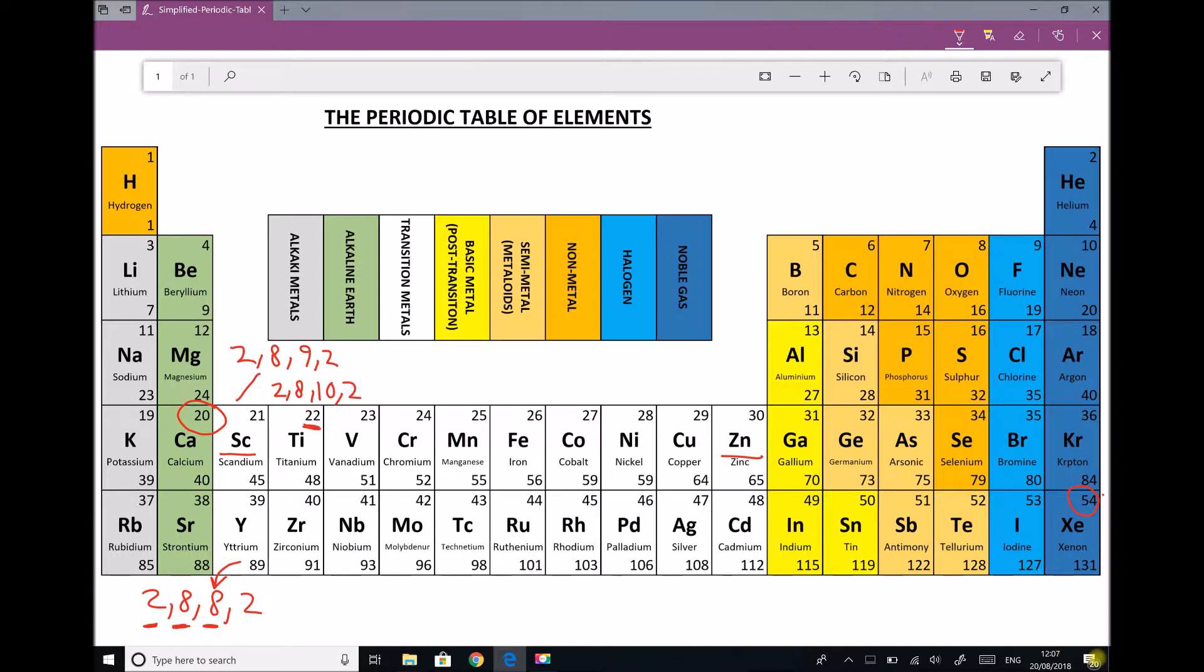Now this method of backfilling electrons remains true for all of the transition metals with the exception of 2. Vanadium sticks by this rule, so vanadium is 2, 8, 11, 2.